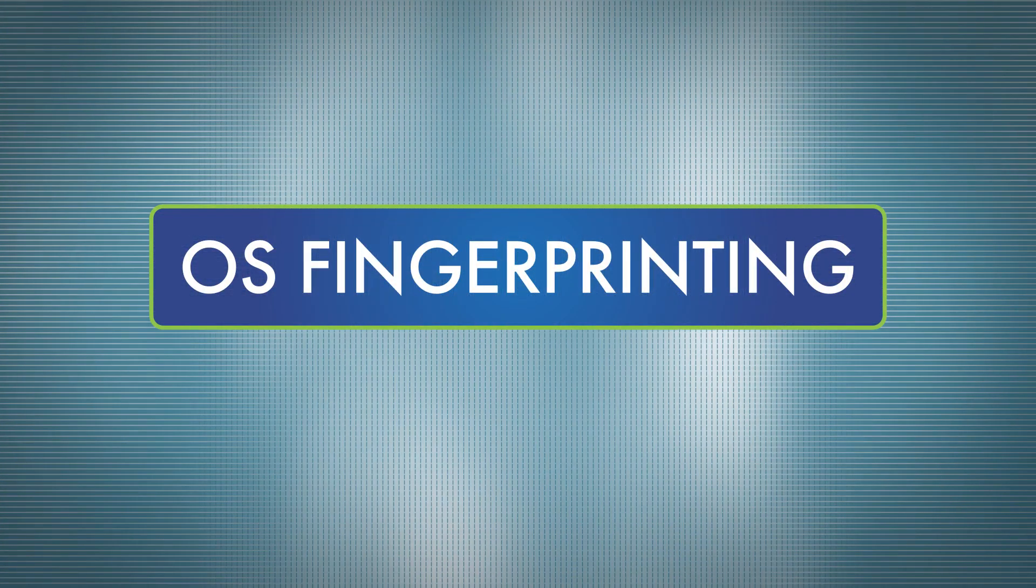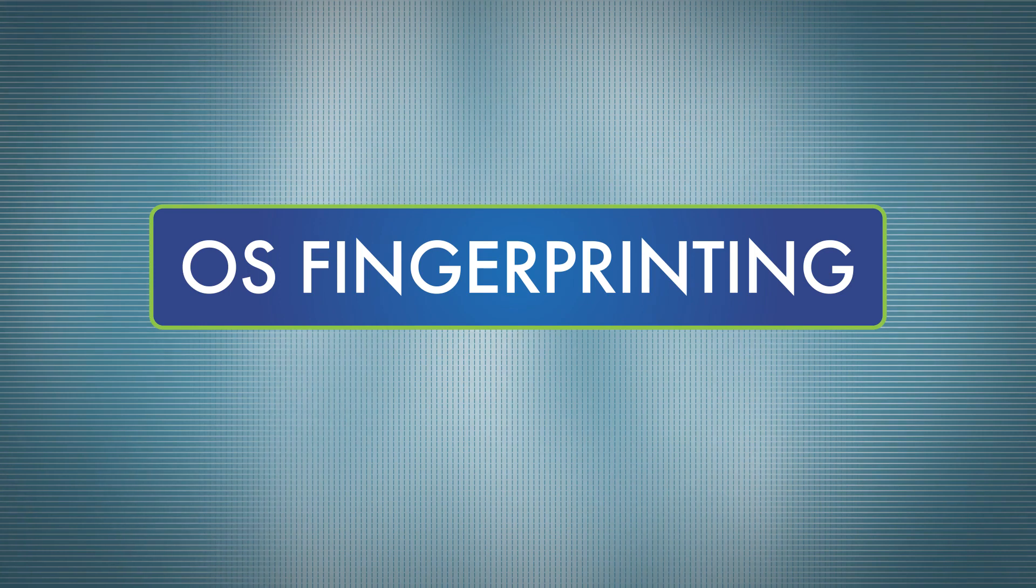OS, or operating system fingerprinting, is a technique used to find out which operating system runs on a particular device. Once a hacker knows which OS is running on a device, he can use means that would work with that particular operating system.